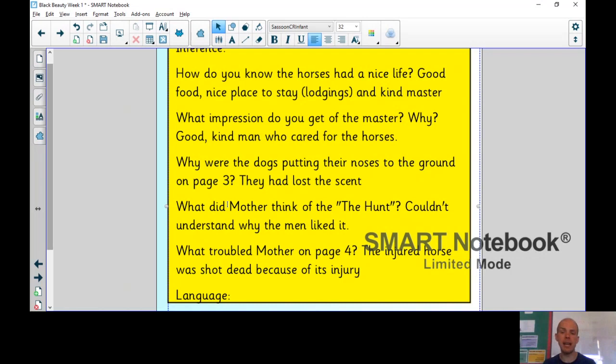So the first question was, how do you know the horses had a nice life? Well, they were provided with good food, nice place to stay. So that word for that was lodgings and they had a kind master. So it was clear they quite enjoyed their time. Additionally, they used to get to play together with the other colts. So it sounded like a pleasant life.